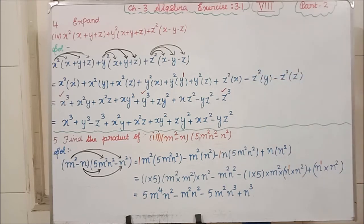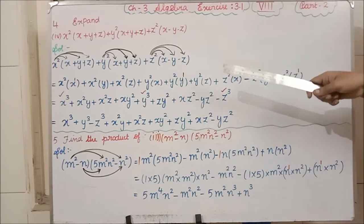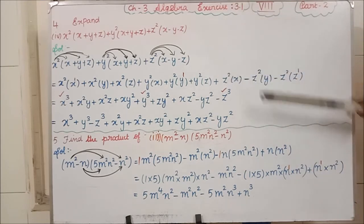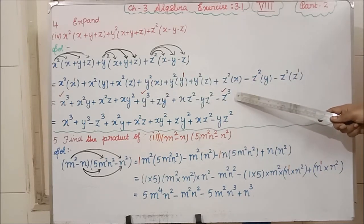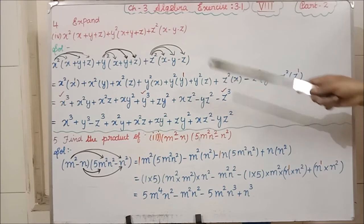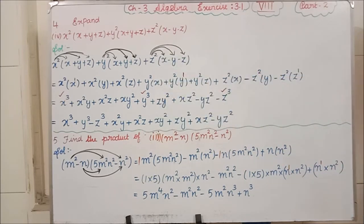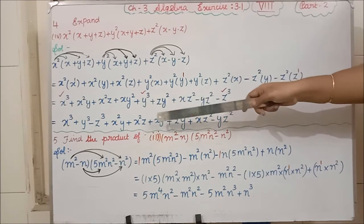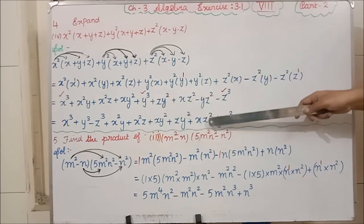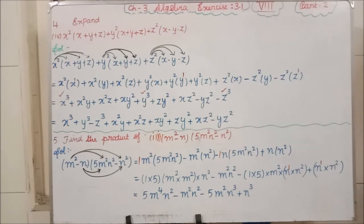In the next step, arrange terms by power. First write all cube terms: X³ + Y³ − Z³. Then write the remaining terms: X²Y + X²Z + XY² + Y²Z + XZ² − YZ². I am arranging first in order of power 3, then power 2. That is the final answer for the fourth subdivision.